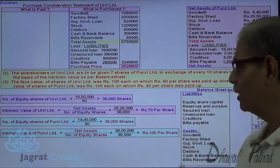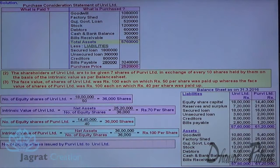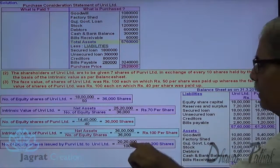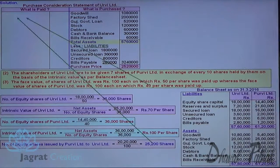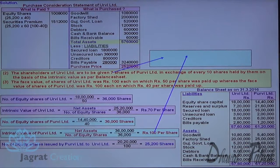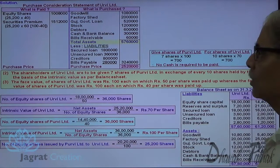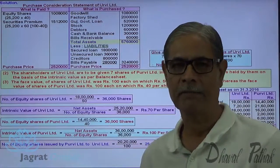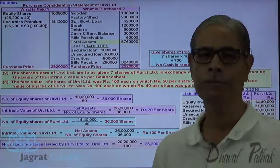The exchange ratio exactly matches with the intrinsic values. Number of shares to be issued: the purchase consideration is 25,000 divided by 100, which should be 25,200 — there is a correction here. The paid-up value is 40 and intrinsic value is 100, so 100 minus 40 = 60 is the securities premium. So 7 shares at intrinsic value of 100 each against 10 shares at intrinsic value of 70 each — no cash is required to be paid. This is how the purchase price is paid. The purchase consideration and payment are worked out on the basis of intrinsic value, and the exchange ratio exactly matches. That's an important point of this sum.